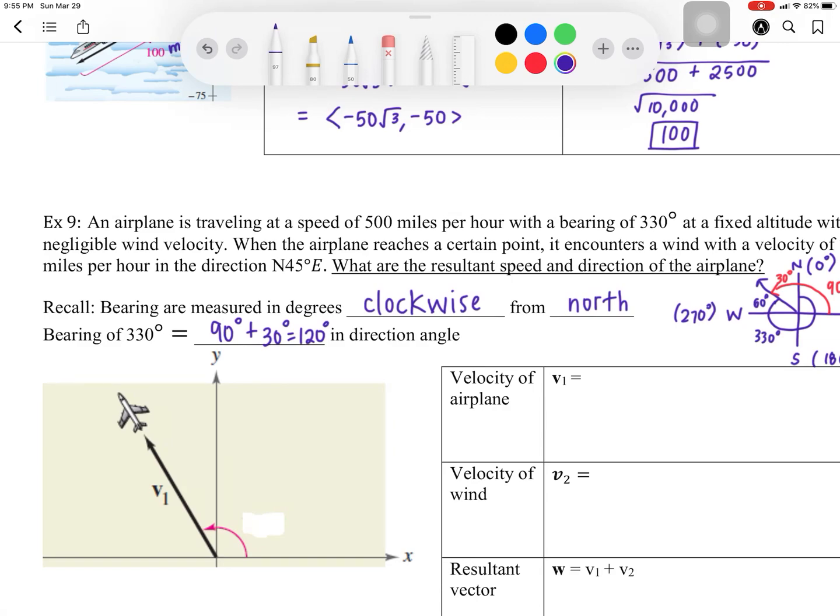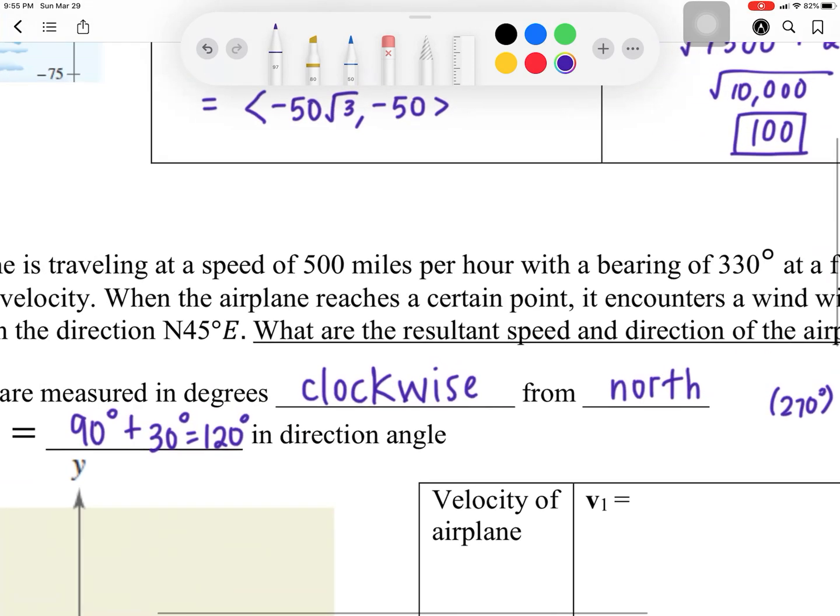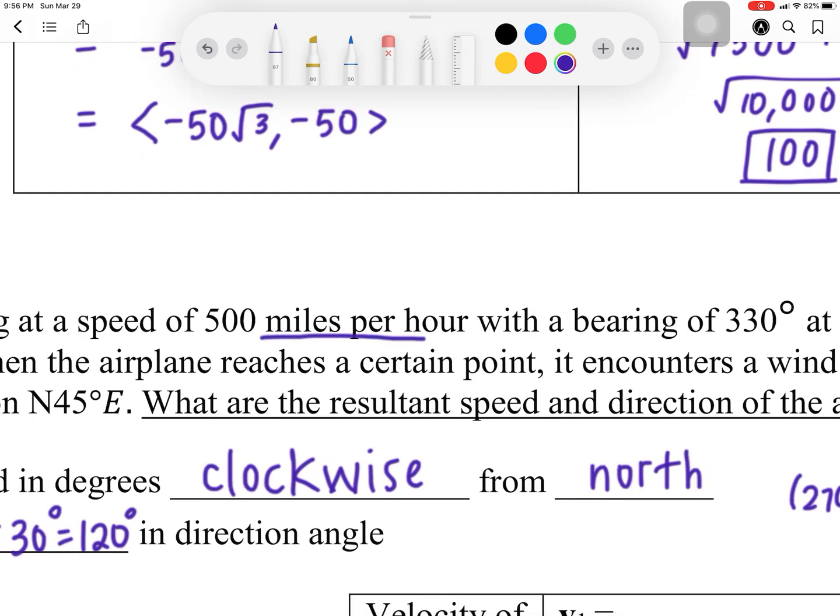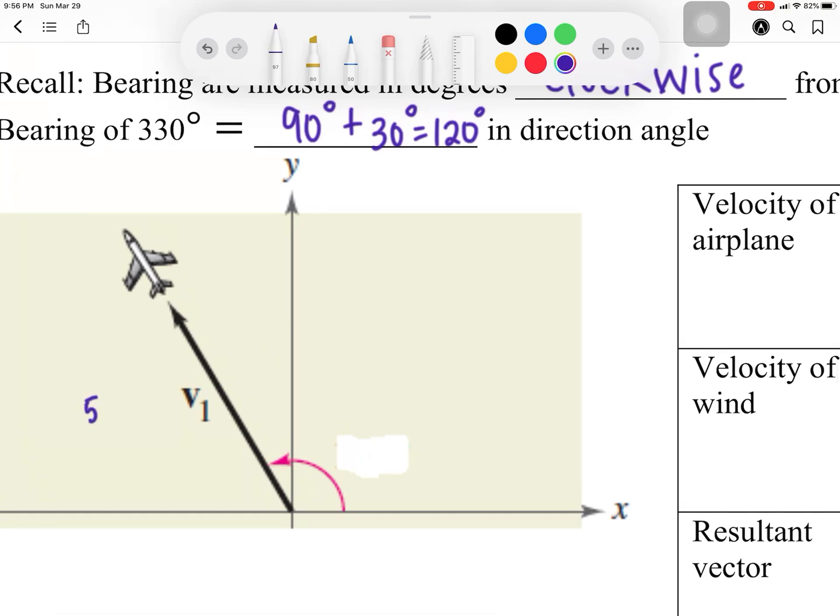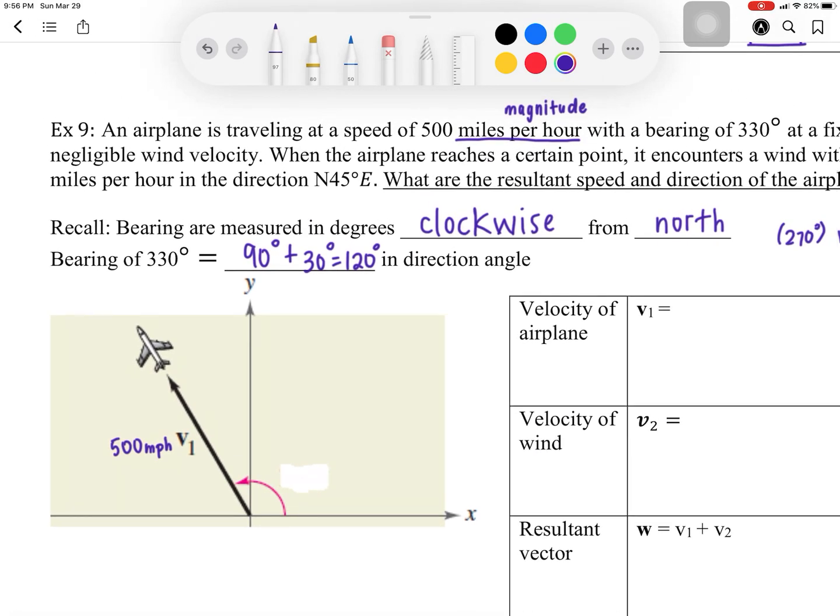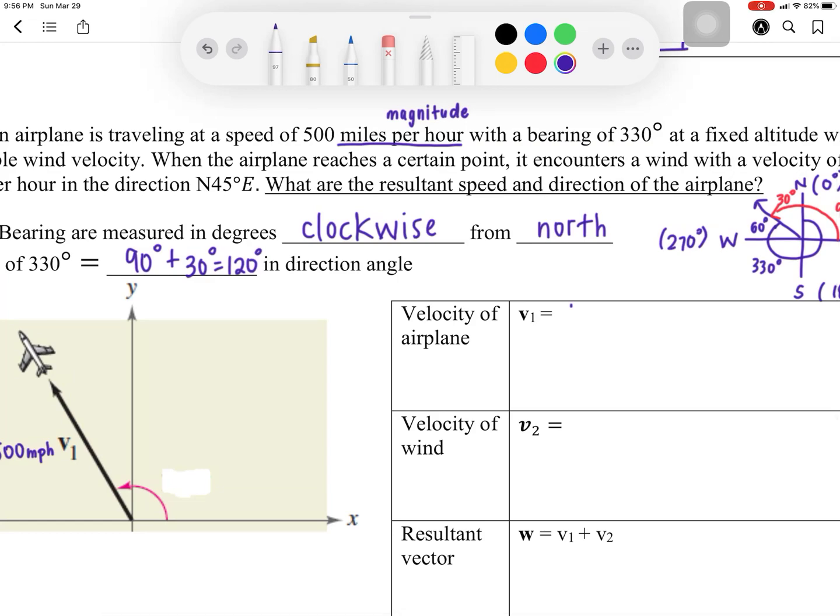So V1 is going to be our velocity for the airplane. It says it was 500 miles per hour. Whenever you see miles per hour, that's going to be your magnitude. So this is 500 miles per hour, your magnitude. And we have to find the velocity of the airplane. So remember the formula: it goes magnitude of V, and you're going to multiply by cosine of theta and sine of theta. Remember, theta here is your direction angle. What is the magnitude of V, the airplane? It was 500.